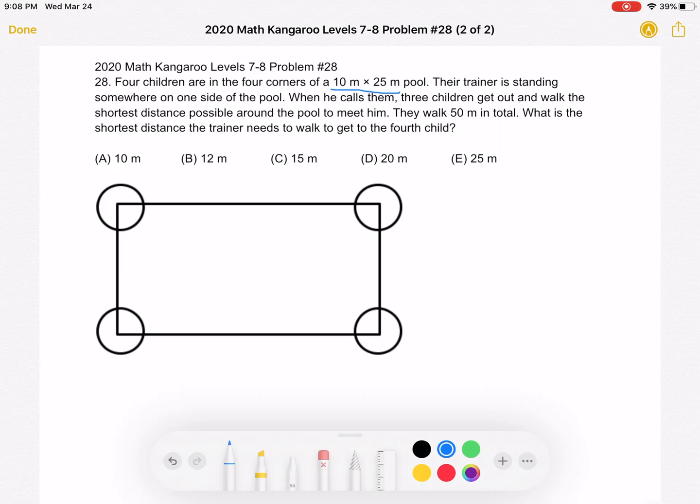So we need to choose three children that are going to get out and walk the shortest distance possible to their trainer. So we notice that no matter how we choose the three children, two of the children are going to be diagonally opposite each other. Without loss of generality, let's choose these two first.